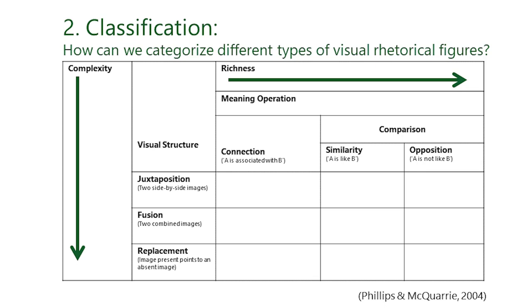The second axis is concerned with the visual complexity of a visual rhetorical figure. Visual complexity refers to the demands an image places on recipients to process the ad. Complexity is determined by the structure of an ad and refers to the way two elements comprising the visual rhetorical figure are physically pictured. The least complex way to arrange two elements is to juxtapose them side by side. A more complex structure includes fusing two elements together. And the most complex way to organize two elements is to replace one element with the other — the element that is present calls to mind the element that is absent. I will now illustrate the different types using real ads as examples.